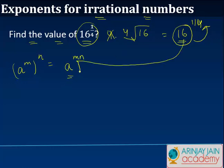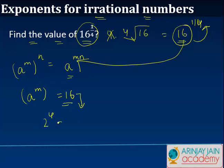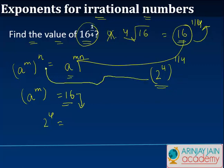So, can we express this 16 in such a fashion that a to the power m is basically equal to 16? We note that 16 can be written as 2 to the power 4. In other words, this 16 can be written as 2 to the power 4, and then this can be written as to the power 1 by 4. This basically becomes nothing but that equation, which we know can be written as 2 to the power 4 into 1 by 4. These two cancel and the answer is 2.